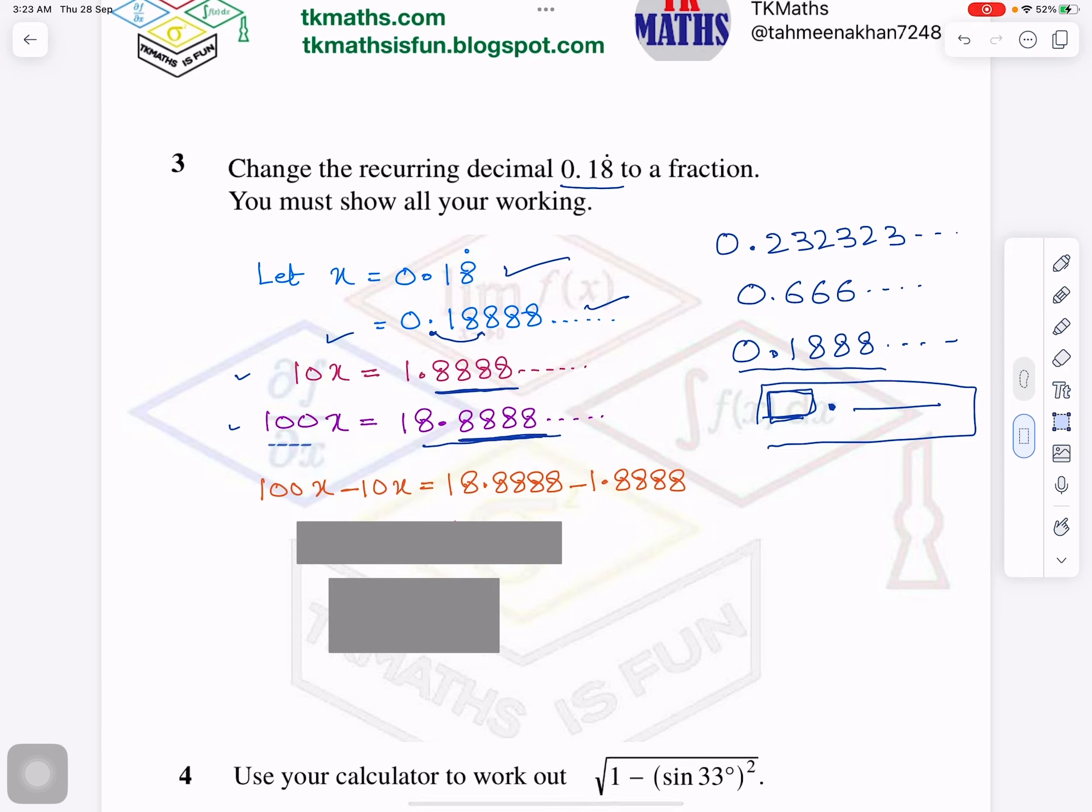So 100x minus 10x. This minus this. So 100x minus 10x is equals to this minus this. Now 100 minus 10, I think all of you know what is 100 minus 10? 90.